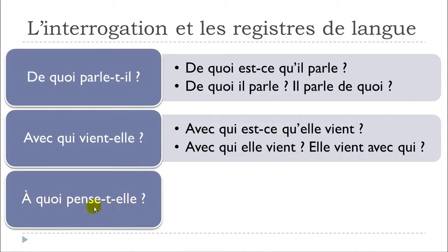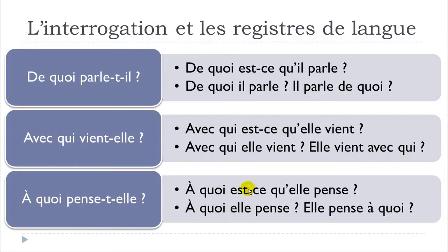'À quoi pense-t-elle?' — here we're thinking about something (not someone), so we use 'quoi'. The everyday form: 'À quoi est-ce qu'elle pense?' And the informal forms: 'À quoi elle pense?' and 'Elle pense à quoi?' Remember to raise your voice at the end since these are questions. Full review: De quoi parle-t-il? / De quoi est-ce qu'il parle? / De quoi il parle? / Il parle de quoi? — Avec qui vient-elle? / Avec qui est-ce qu'elle vient? / Avec qui elle vient? / Elle vient avec qui? — À quoi pense-t-elle? / À quoi est-ce qu'elle pense? / À quoi elle pense? / Elle pense à quoi?